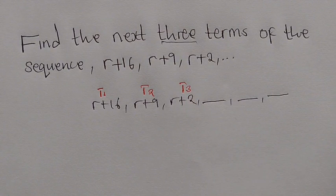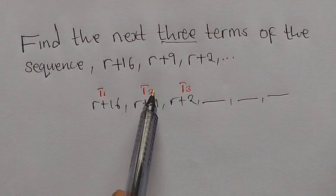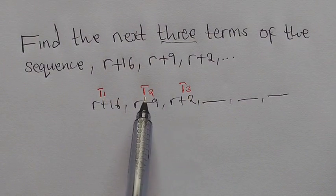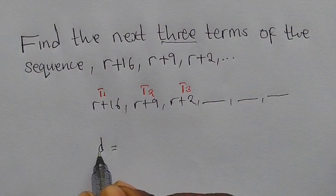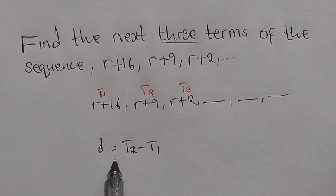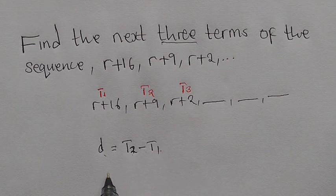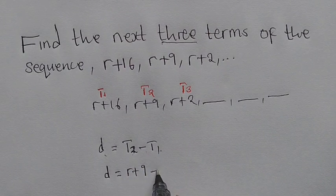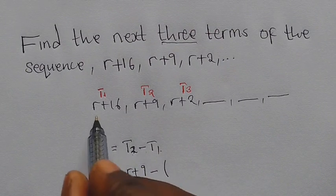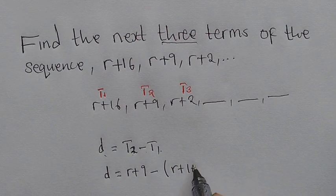We know that when finding the common difference under arithmetic progression, we say: common difference equals term two minus term one, or term three minus term two. So I'm going to use this principle: D equals term two minus term one. So D equals R plus 9, minus R plus 16.